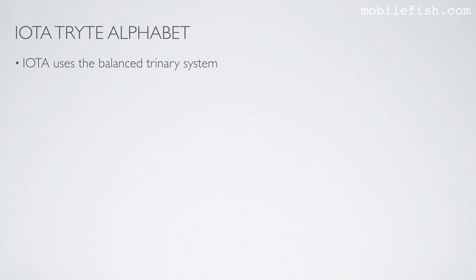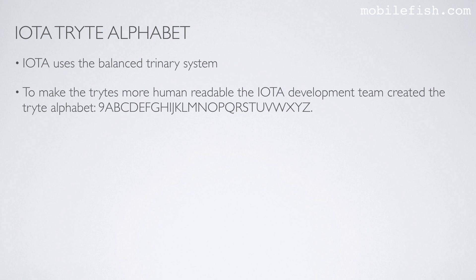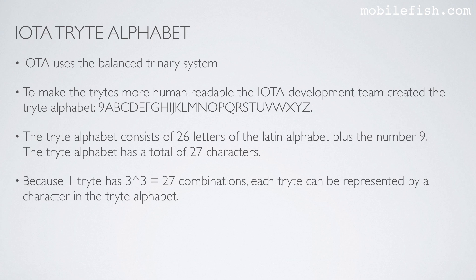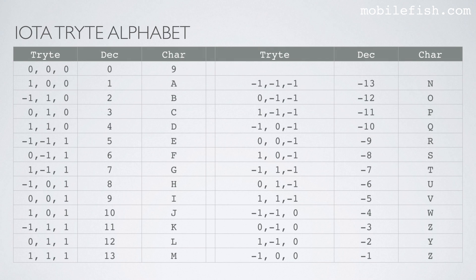IOTA uses the balanced trinary system. To make the trytes more human readable, the IOTA development team created the tryte alphabet. This alphabet consists of the 26 letters of the Latin alphabet plus the number 9, giving a total of 27 characters. Because one tryte has 3 to the power of 3, or 27 combinations, each tryte can be represented by a character in the tryte alphabet. You can clearly see it is a balanced trinary system.